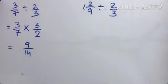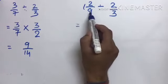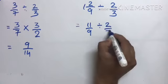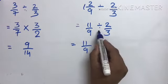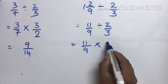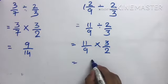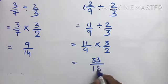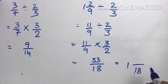What if mix fraction हो? तो पहले mix fraction को improper fraction में change करना: 9 × 1 = 9, 9 + 2 = 11, so 11 by 9 divided by 2 by 3। अभी 11 by 9 as it is रखो, divide का multiply करो, reciprocal हो जाएगा 3 by 2। So 11 × 3 = 33 और 9 × 2 = 18। Answer: 33 by 18।